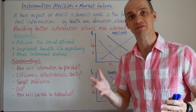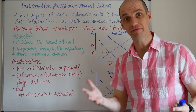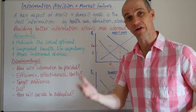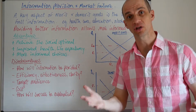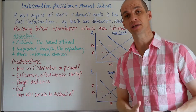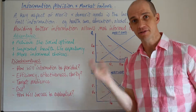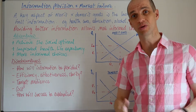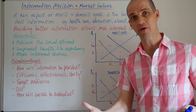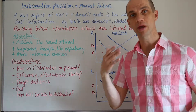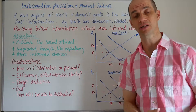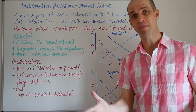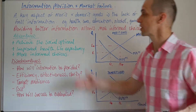Hi guys. Let's now take a look at information provision as a means of actually resolving consumption externalities. These may be negative consumption externalities when it comes to demerit goods, or they may be positive consumption externalities when it comes to merit goods.